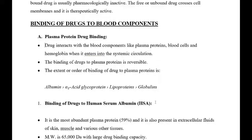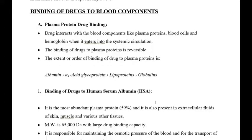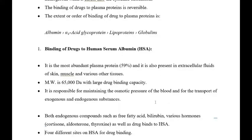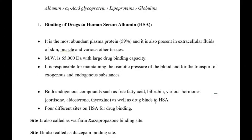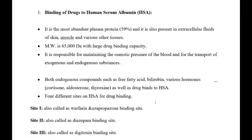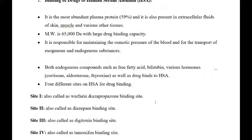First, let us discuss the binding of drugs to human serum albumin (HSA). It is the most abundant protein at 59% and is also present in the extracellular fluid of the skin, muscle, and various other tissues. The molecular weight of human serum albumin is 65,000 Dalton with a large drug binding capacity. It is responsible for maintaining the osmotic pressure of the blood and for the transport of exogenous and endogenous substances. Both endogenous compounds such as free fatty acids, bilirubin, various hormones, cortisone, aldosterone, and thyroxine, as well as drugs, bind to HSA.